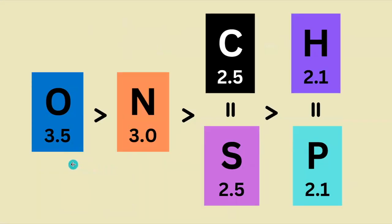If we rank the CHONPS atoms by electronegativity, oxygen is the highest, and then we have a tie for hydrogen and phosphorus for the lowest at 2.1.